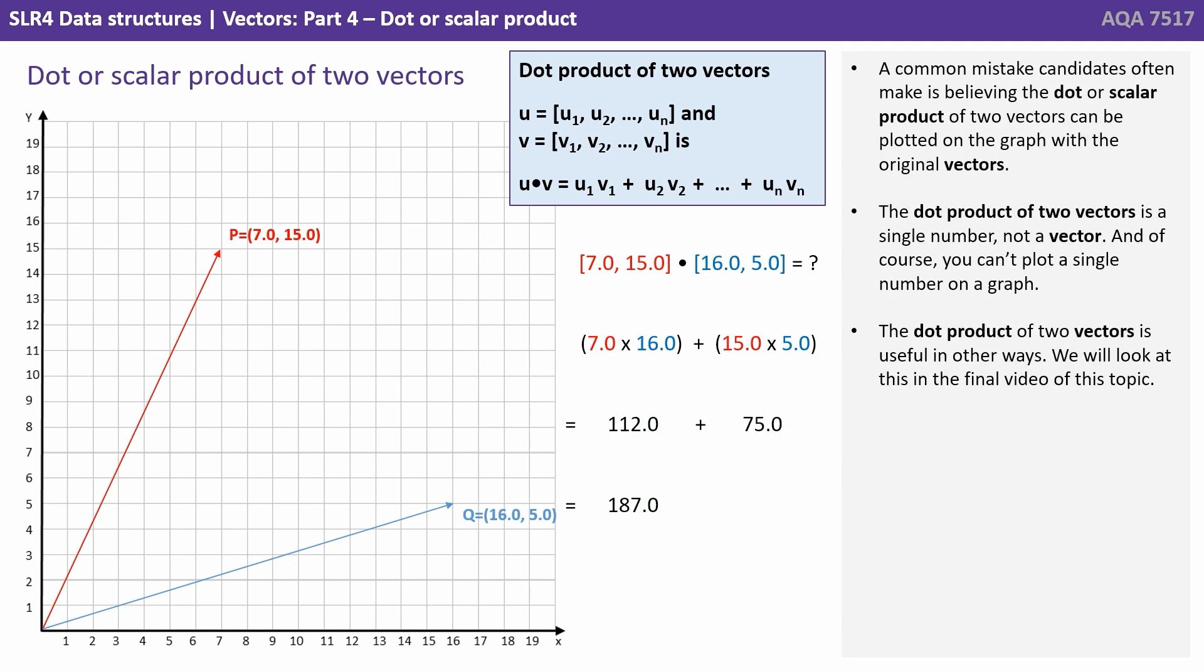A common mistake candidates often make is believing the dot or scalar product of two vectors can be plotted on the graph with the original vectors. The dot product of two vectors is a single number, not a vector, and you can't plot a single number on a graph.